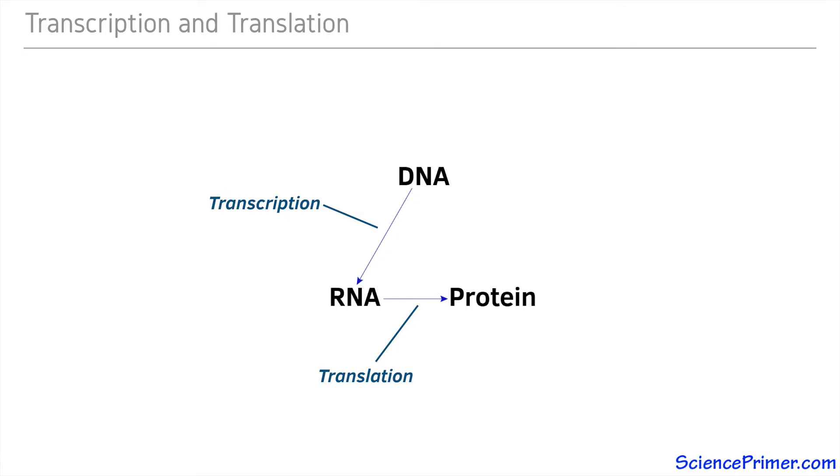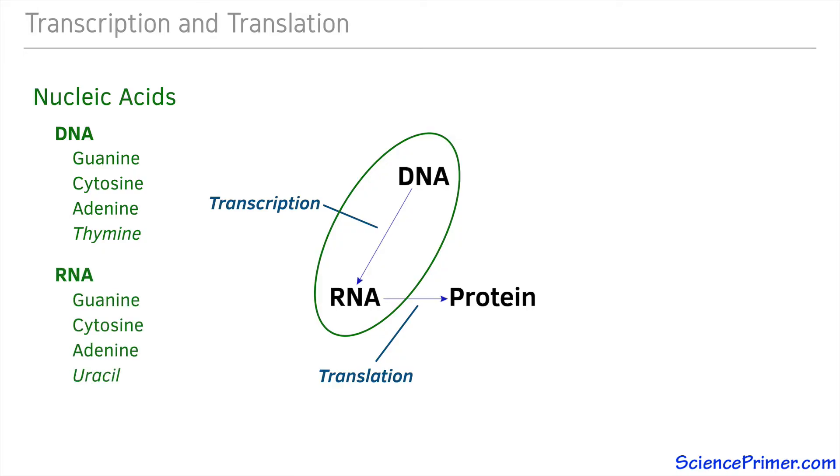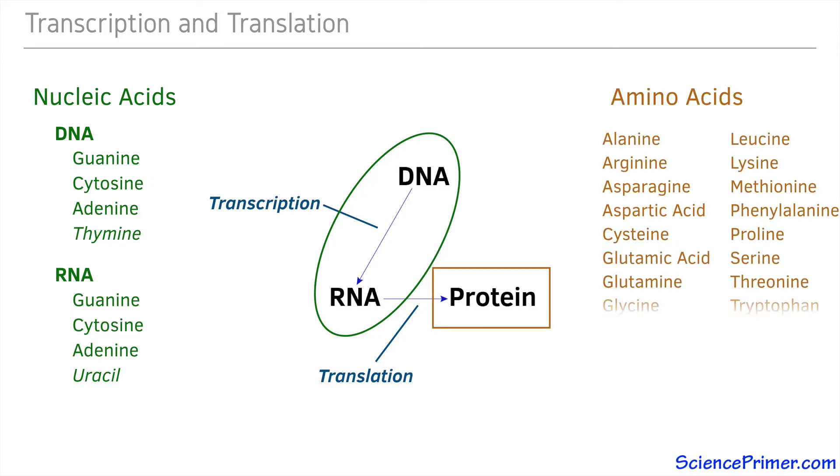DNA, RNA, and protein are all made up of linear strands of subunits. The subunits in both RNA and DNA are nucleic acids. DNA uses guanine, cytosine, adenine, and thiamine, while RNA uses guanine, cytosine, adenine, and uracil. Proteins, on the other hand, are made up of linear strands of amino acids.